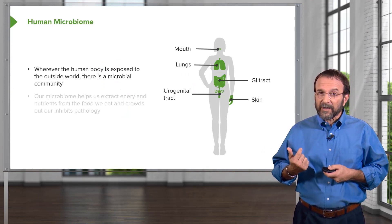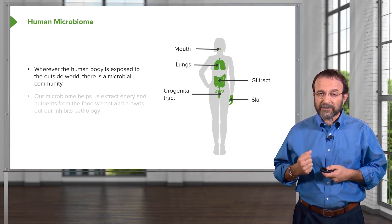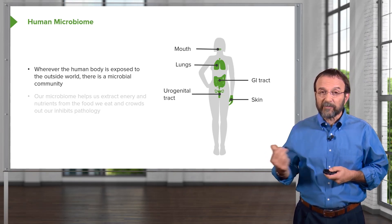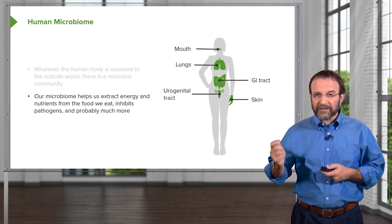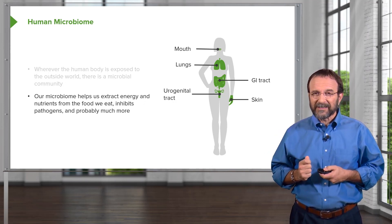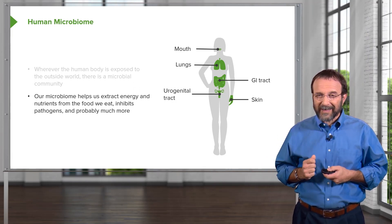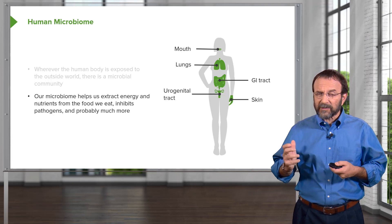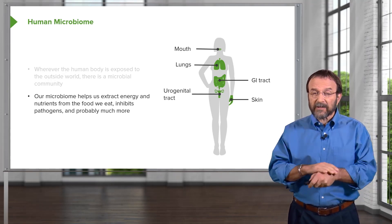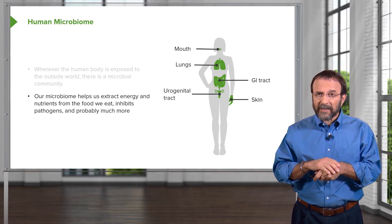Wherever the human body is exposed to the outside world, there's a microbial community — the mouth, the lungs, the GI tract, the urogenital tract, the skin, and probably other places we haven't even found yet. This microbiome is just beginning to be unraveled. It certainly helps us extract energy and nutrients from the food we eat, and it also appears to inhibit the growth of pathogens not only in us but on our skin. The microbes on our skin produce antimicrobial compounds that protect us.